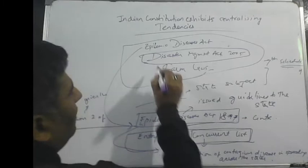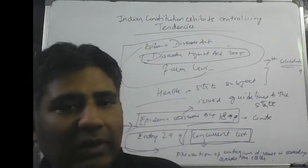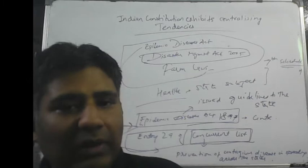Plus, the Disaster Management Act 2005. As you know, disaster is not mentioned in any of the lists of the Constitution. So the center has used residuary powers to enact the Disaster Management Act 2005. Residuary powers means powers over subjects which are not mentioned in any of the lists. The center enacted the Disaster Management Act 2005 to deal with any natural disaster.